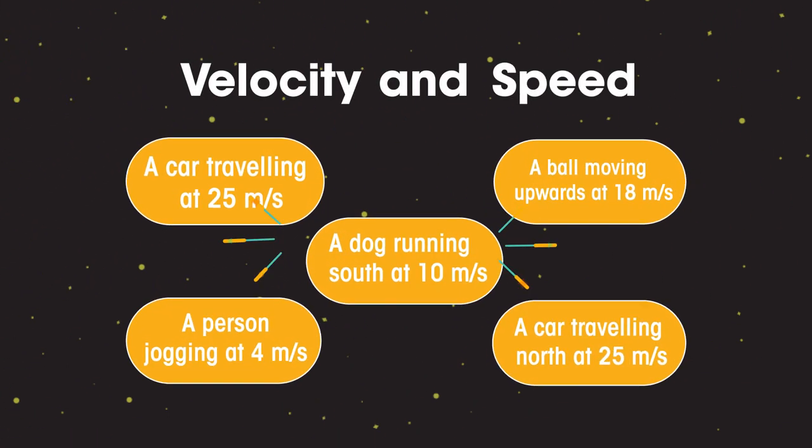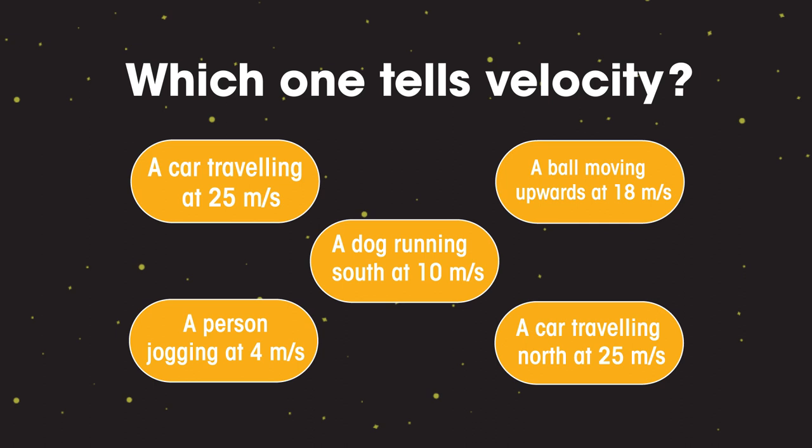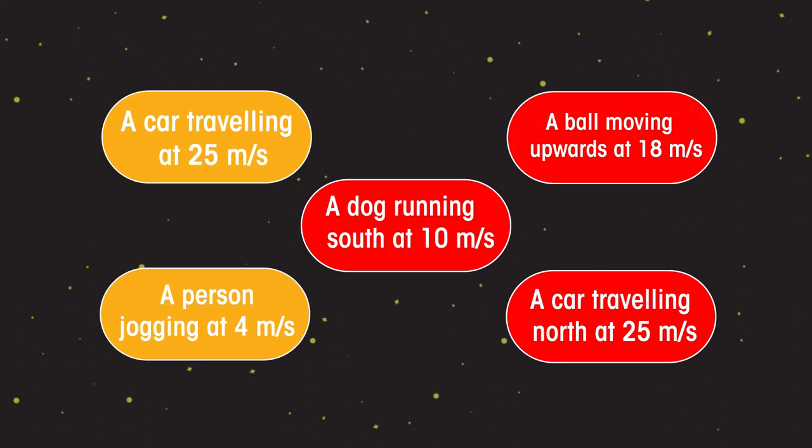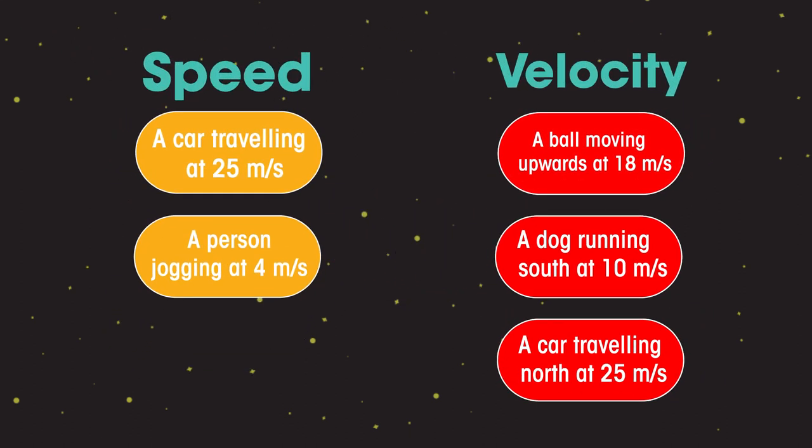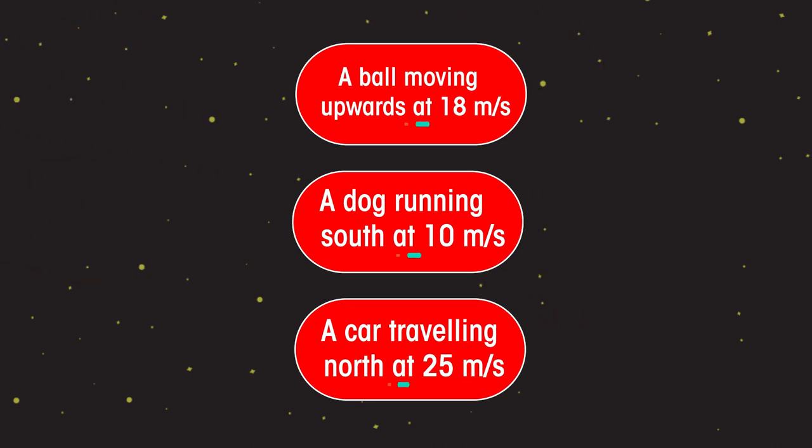First of all, let's learn the difference between velocity and speed. Which of these measurements tells us a velocity? So how is velocity different to speed? They both contain information about speed. Velocity is speed in a given direction.